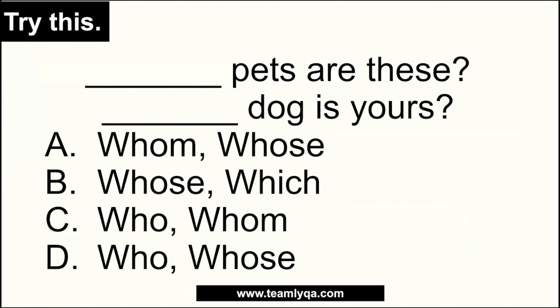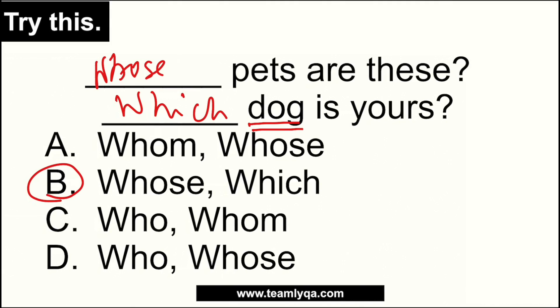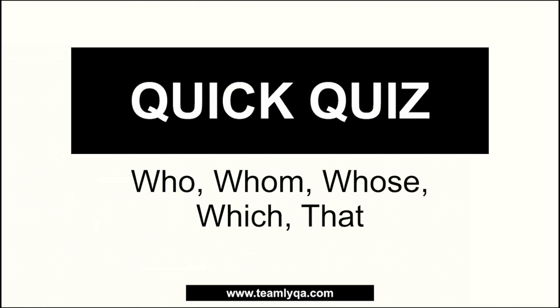Now you can try this. 'Blank pets are these?' and 'Blank dog is yours?' For the first: we're asking kaninong mga alaga ang mga ito — that's about ownership, so the answer is 'whose': 'Whose pets are these?' For the second: we're asking which among the dogs present is yours — there are options in front of you, so the answer is 'which': 'Which dog is yours?' The answer is letter B. The best way to check your understanding is the quick quiz. Get your pen and paper ready.